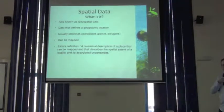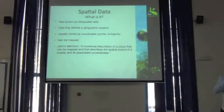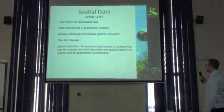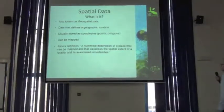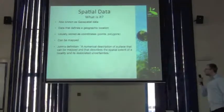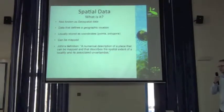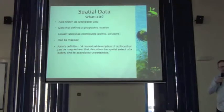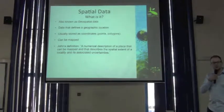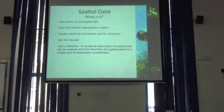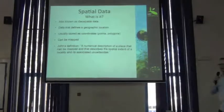Spatial data — in this section I'm going to go over it as quickly as possible because John has already introduced some of the tools. Briefly, what is it? You might have heard it called geospatial data. It defines geographic location, stored as coordinates, points, or polygons, and it can be mapped. I'd like to go back to John's definition from yesterday, which takes into account the concept of uncertainty: a numerical description of a place that can be mapped when it describes the spatial extent of the locality and its associated uncertainty.